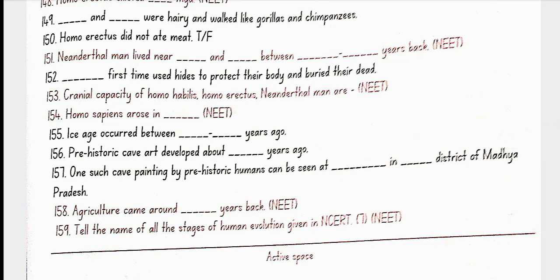Neanderthal man lived near East and Central Asia between 100,000 to 40,000 years back. Neanderthal man first time used hide to protect their body and buried their dead. Cranial capacity of Homo habilis was 650 to 800 cc. For Homo erectus, it was 900 cc. And Neanderthal man, it was 1400 cc.